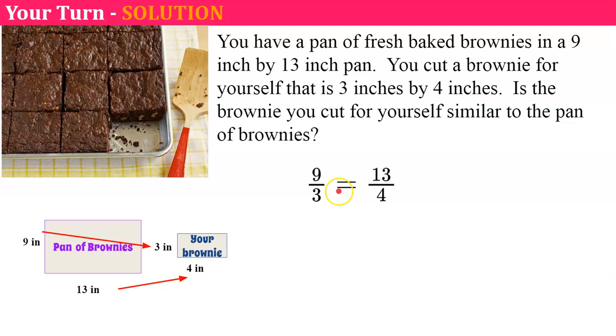9 over 3 must be equal to 13 over 4 if they're similar. 9 times 4, 3 times 13. 9 times 4 is 36. 3 times 13 is 39. Therefore they are not similar figures. So the brownie I cut is not a similar figure to the pan of brownies.